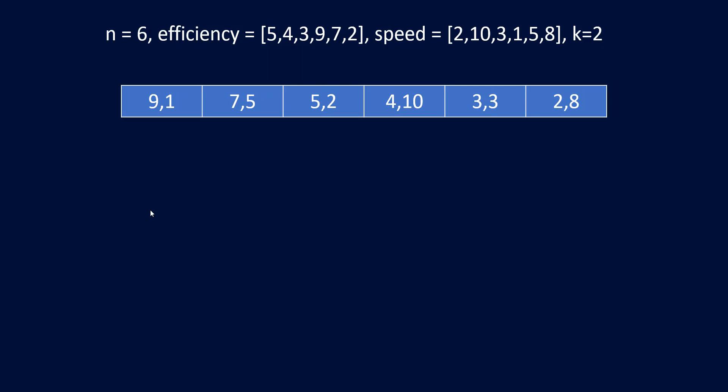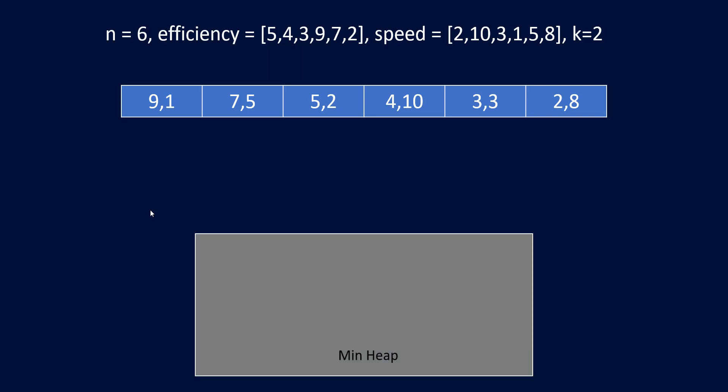The question mentions 'at most k'. Whenever we see 'at most k', 'top k', or 'frequent k' — where we need to find a subset and take the max or min of it — the data structure that comes into play is a priority queue or heap. So we are going to use a heap. Since we need to maximize the result, we need to eliminate the smallest elements, which means we use a min-heap.